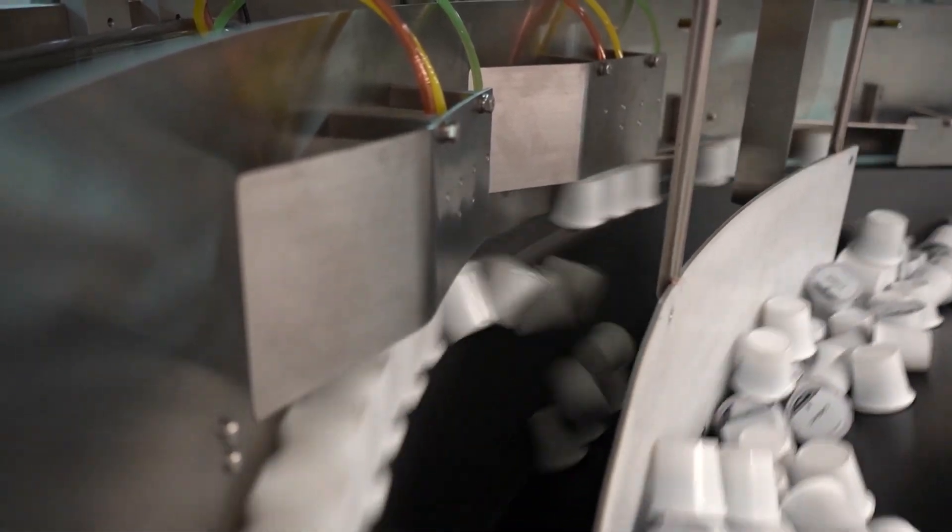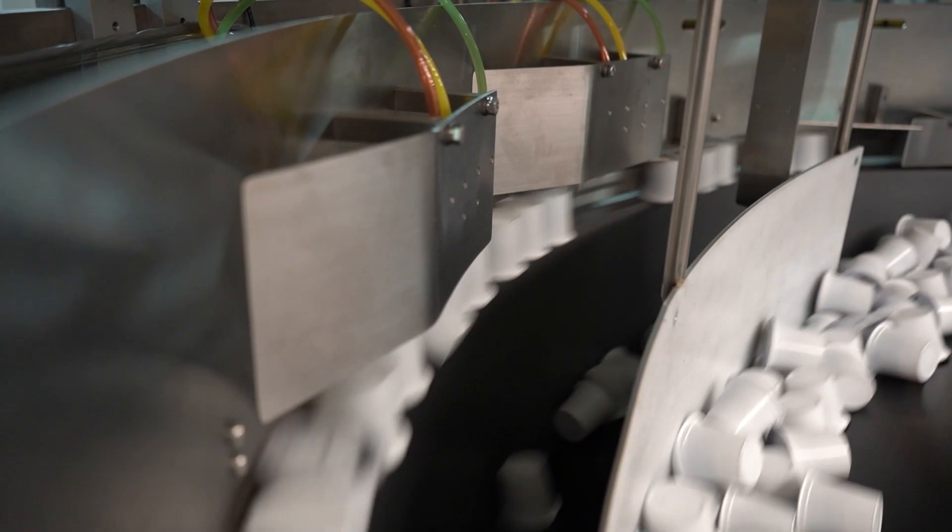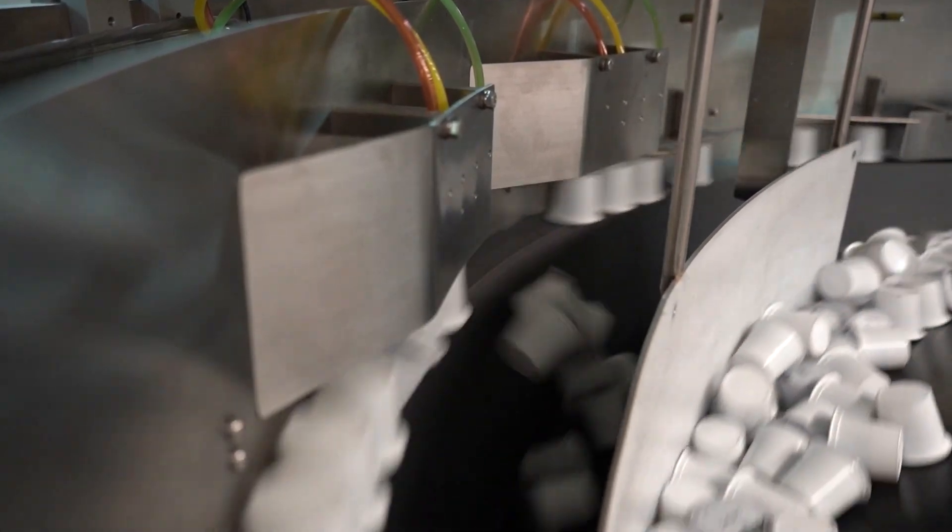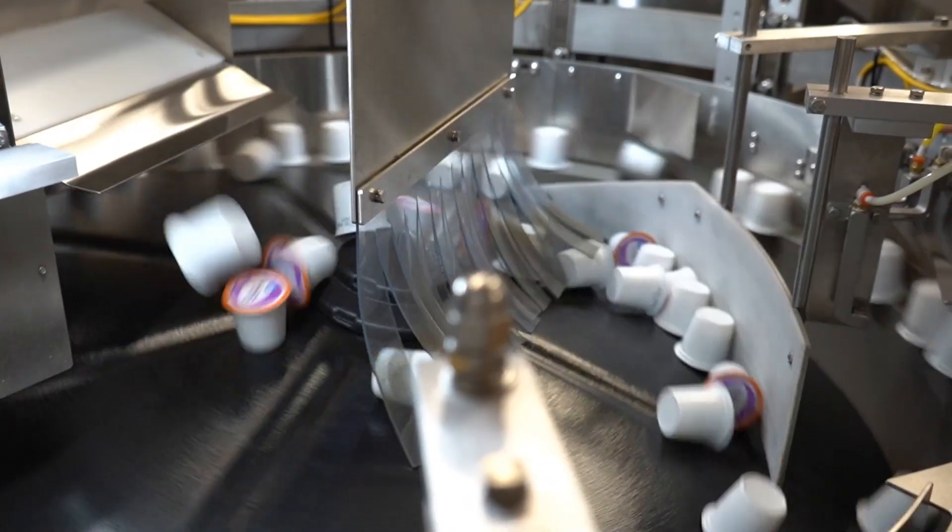Once singulated, the parts travel through tooling features allowing correctly oriented parts to pass and rejecting and recirculating misoriented parts back into the bowl. The correctly oriented parts continue to the feeder's output or discharge and on to the next step in the automation process.